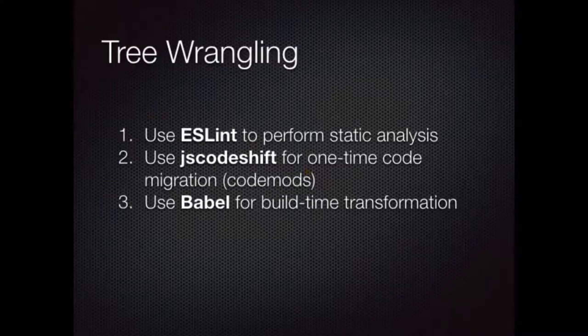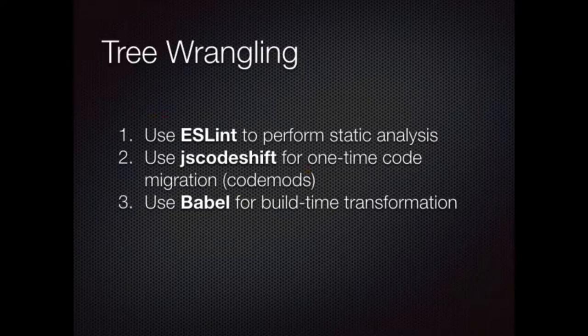The first thing we're going to talk about is static analysis, then code mods, and then transpilers like Babel. The tools we'll be using for wrangling our trees: ESLint for static analysis. How many of you use a linter — JSHint, JSLint, those kinds of things?